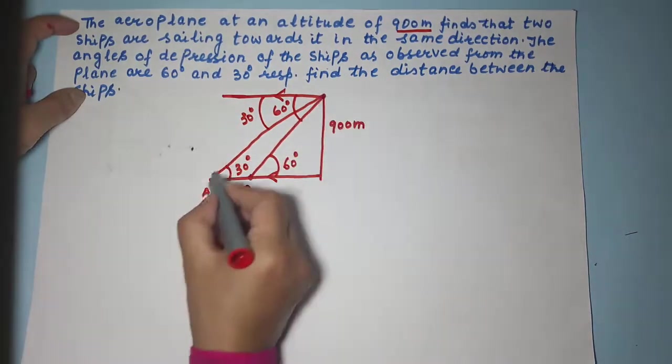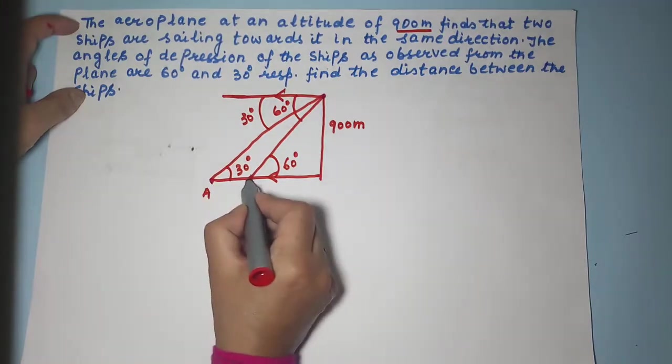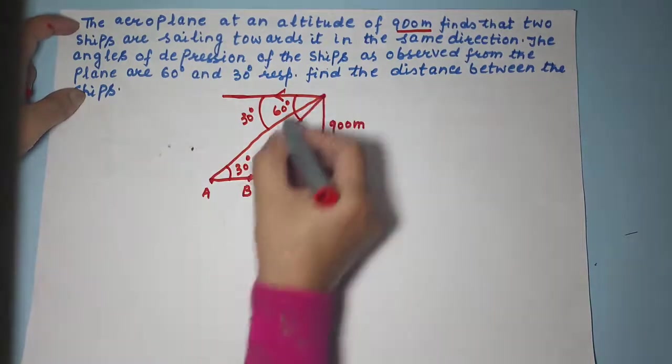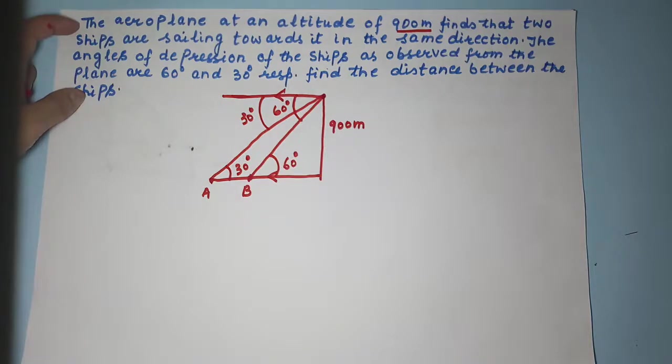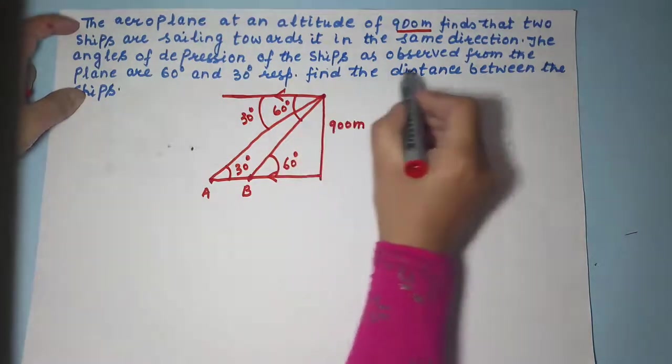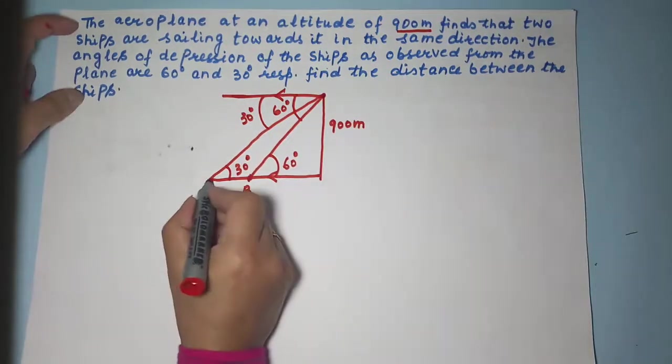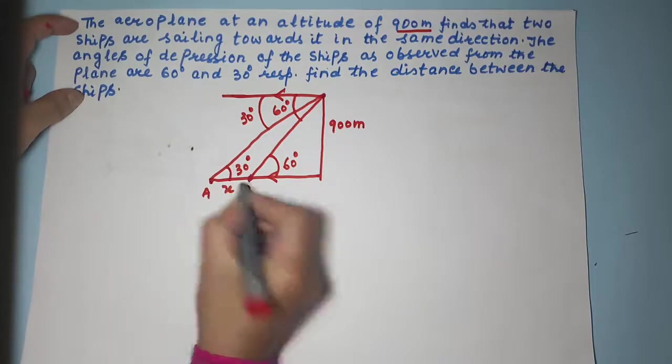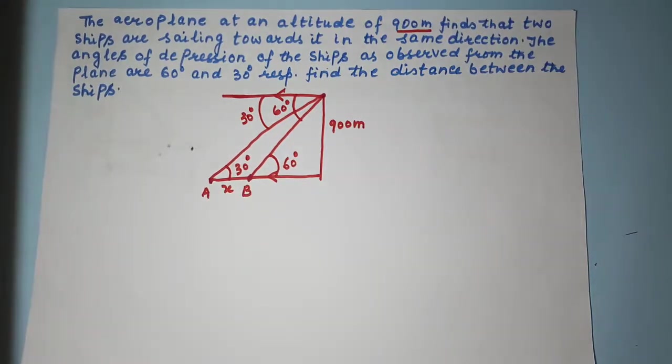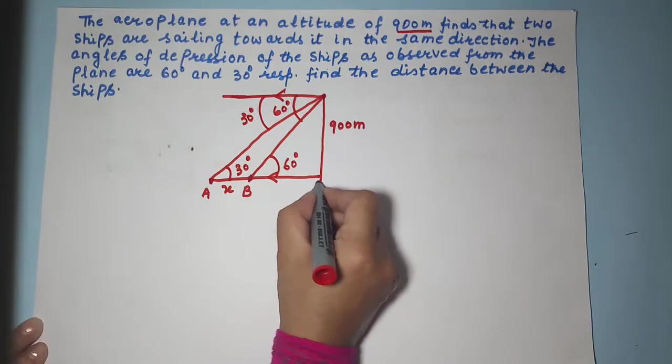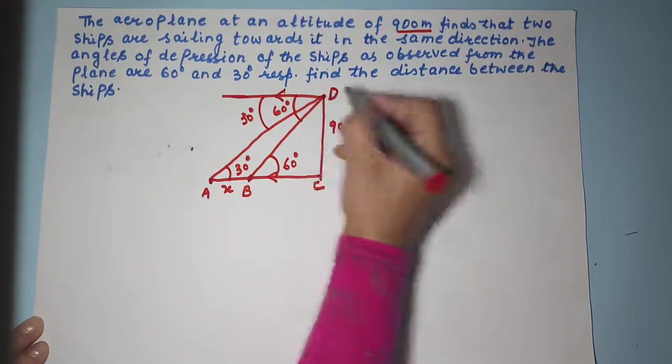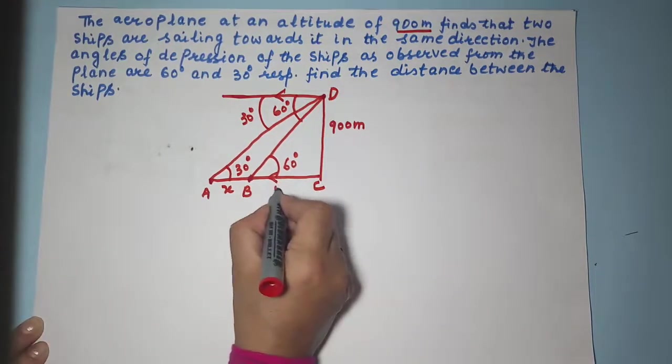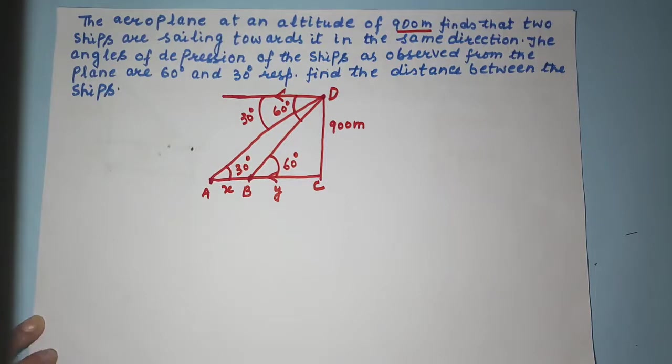Similarly this angle is 30 degree, that is why this angle is 30 degree. So when you look at these two ships the angles of depression are 60 degree and 30 degree respectively. He wants us to find the distance between the ships. That means this distance we have to calculate. Let this distance be X and let's call this as C and let this be D. This distance let this be Y.